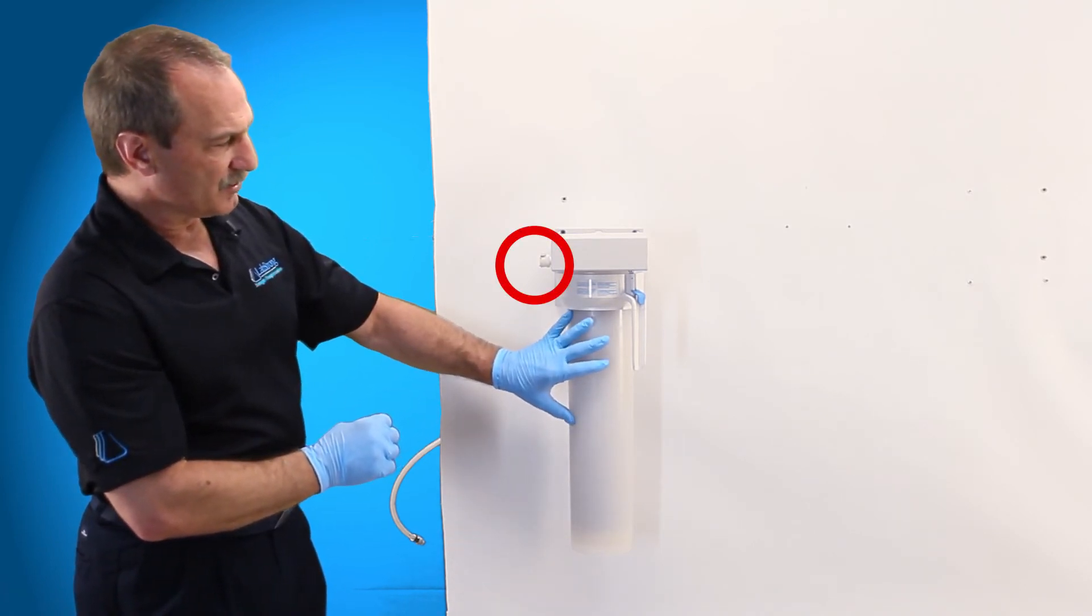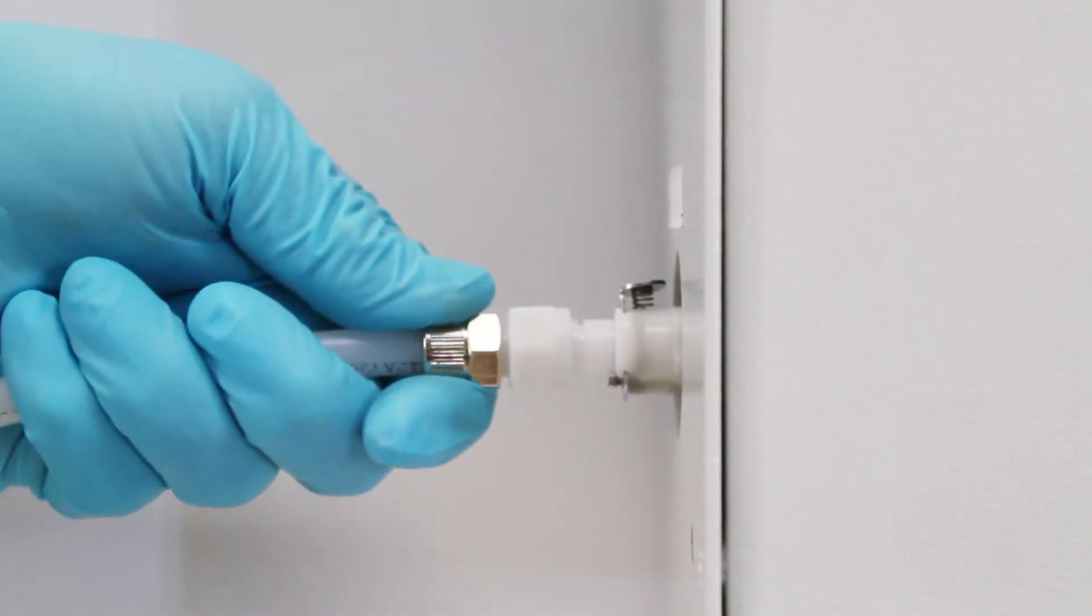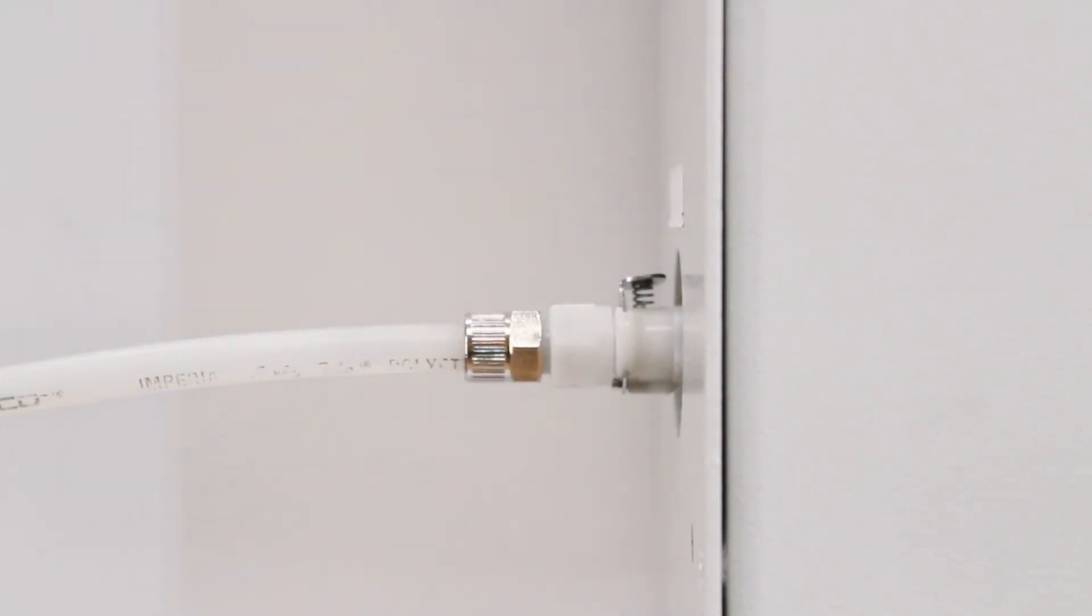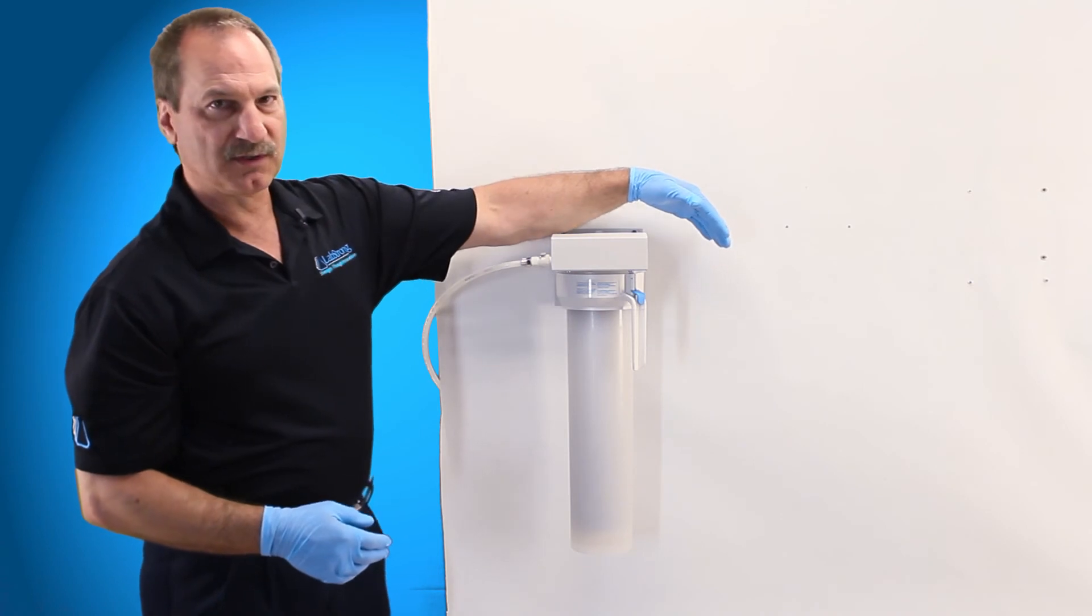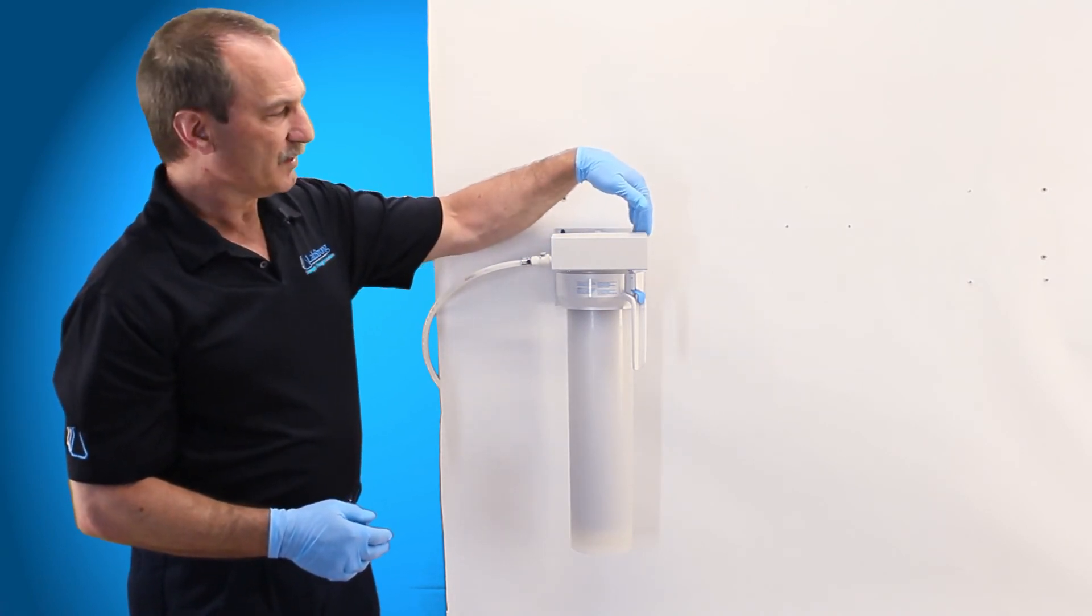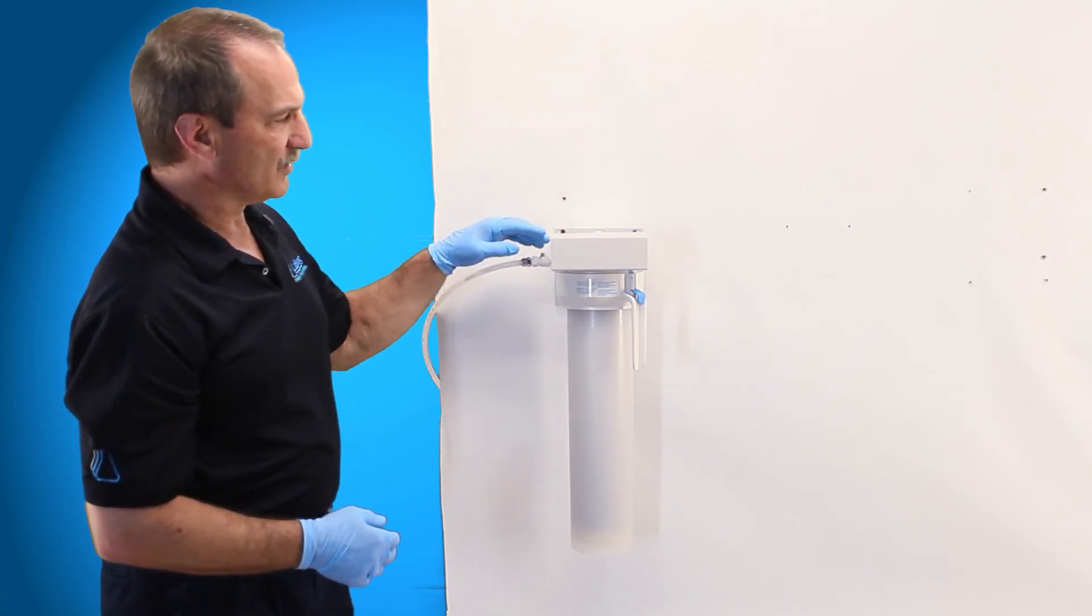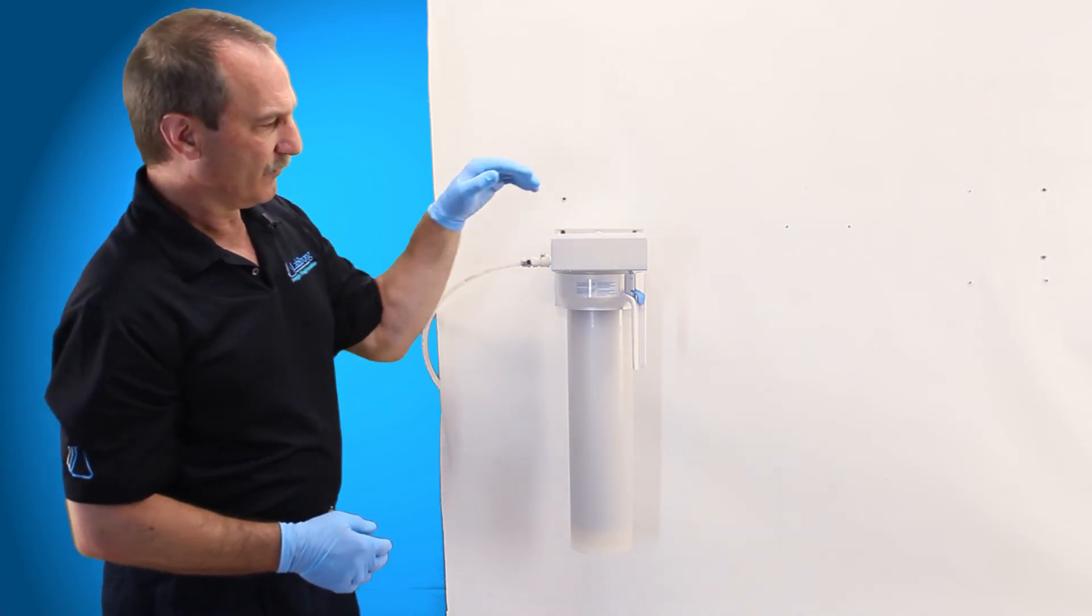So now we have the cartridge installed, we go ahead and connect up our water source. Then this side, whether it goes to another piece of equipment or it goes to a tank or whatever, wherever this is going to feed, you go ahead and open that up. You want to get the air out of it so that should go to drain first.